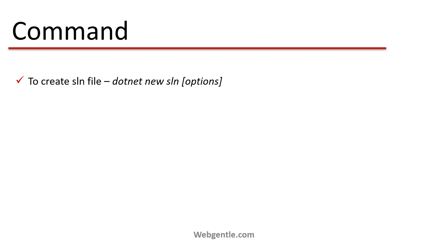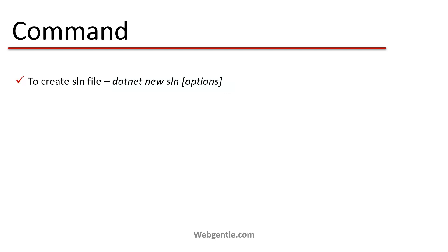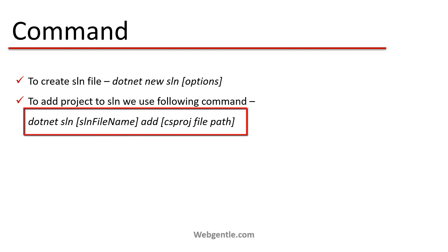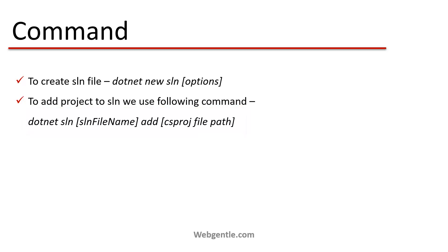To create a solution file we need to run this command: first write the driver which is 'dotnet', then 'new', then 'sln' — this is the type of the template used to create a solution file. After the template name you can provide options such as name. To add a project to the solution file, write 'dotnet sln', then the name of the solution file, then 'add', then the path of the project.